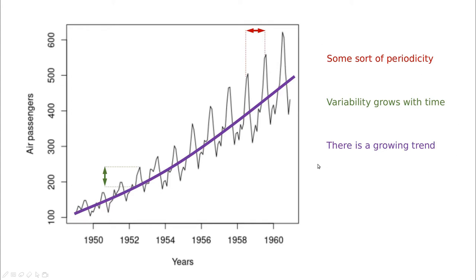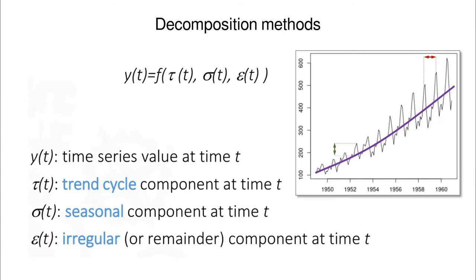We are going to try to capture these three components of the data series, and this is called decomposition. The idea is to capture a function that includes the trend cycle — a linear kind of average growth — the seasonality, and the remainder, which tells us how accurate our prediction is and also gives information about how to predict the future.